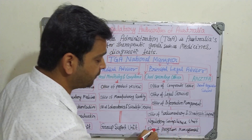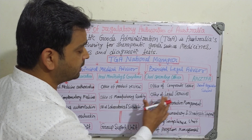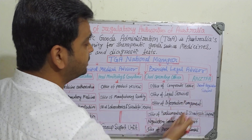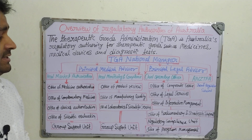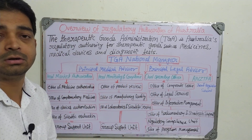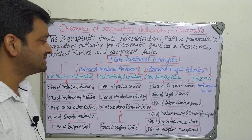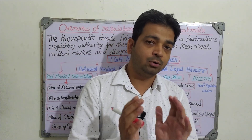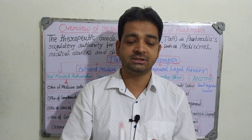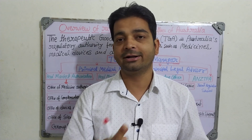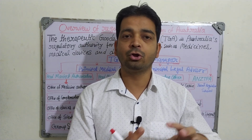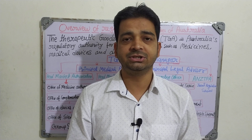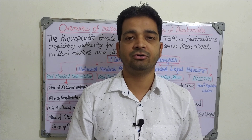Regulatory compliance is also handled under the Chief Operating Officer. This entire system represents the joint regulation scheme between Australia and New Zealand through the ANZTPA. These are the different offices under the TGA National Manager that regulate therapeutic goods — whether medicines, medical devices, or diagnostic kits — anything related to human health. That is the Australian system of drug regulatory affairs.